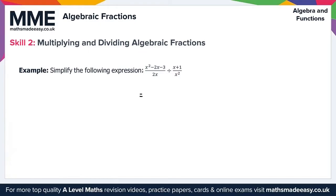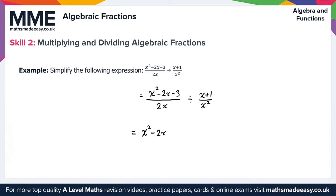Writing the question in full: (x squared minus 2x minus 3) over 2x, divided by (x plus 1) over x squared. We take the reciprocal of the second fraction, flipping it to get x squared over (x plus 1), and change the division to multiplication. This gives us the product of the two numerators over the product of the two denominators.